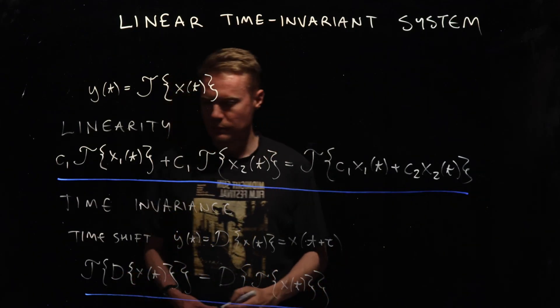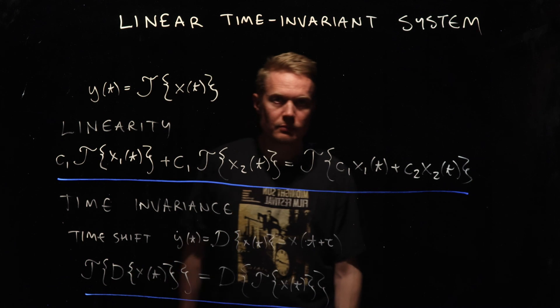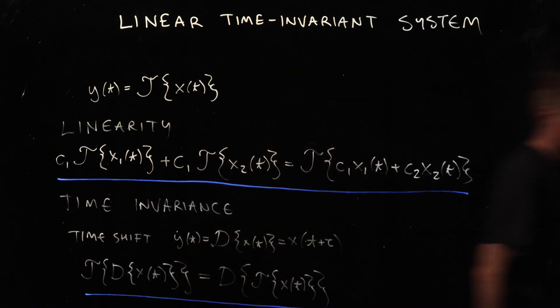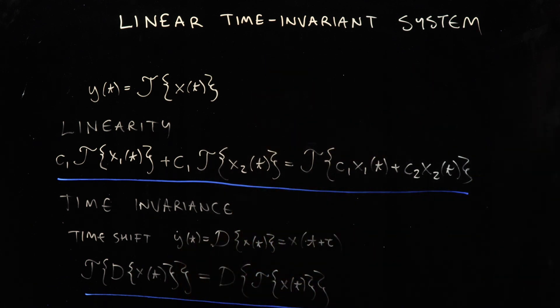If a system is both linear and time-invariant, it is a linear time-invariant system. Most of the systems that we will be discussing during this course are linear time-invariant systems. We will later on see that these types of systems can be very easily analyzed using a spectral decomposition of signals. We'll also see that a linear time-invariant system can be completely characterized by something called an impulse response, which is the output of a system when using a unit impulse as an input signal.